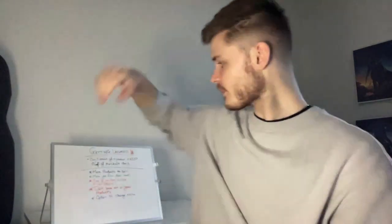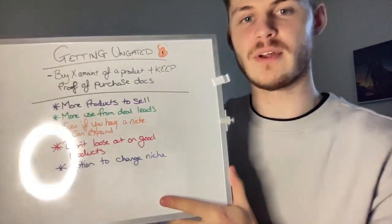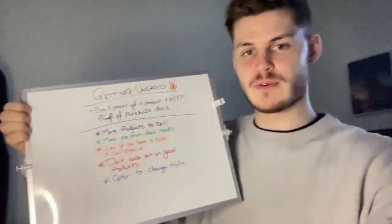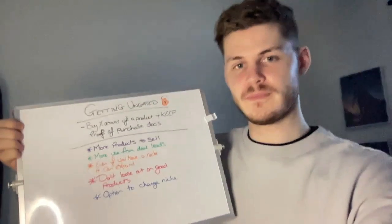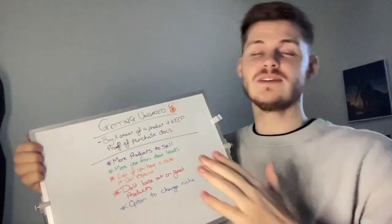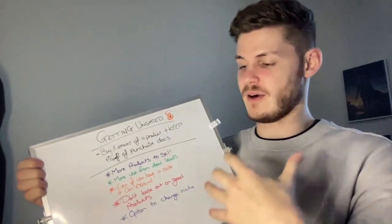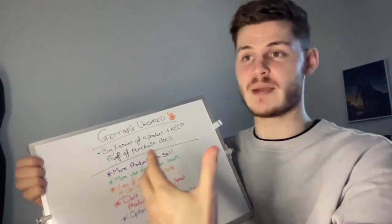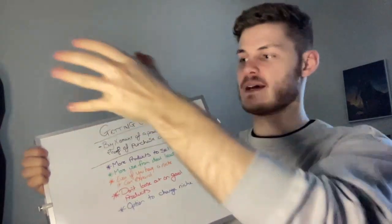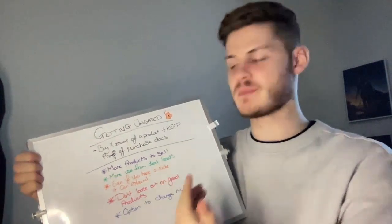So you need to be able to get ungated in a particular category in order to sell everything that comes under that category's umbrella. I've got the trusty whiteboard here and we're going to be going through some of the key points. Getting ungated — how exactly you go about getting ungated is no complicated process. It just takes adding a product to your Amazon inventory, and then when you choose the category, that's when Amazon will come up with the list of requirements for selling in that particular category.